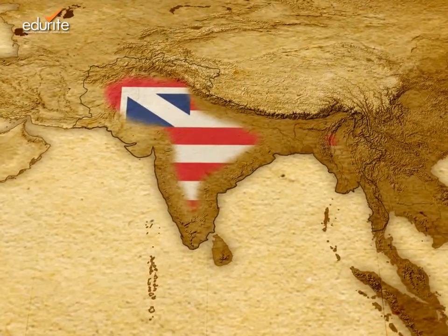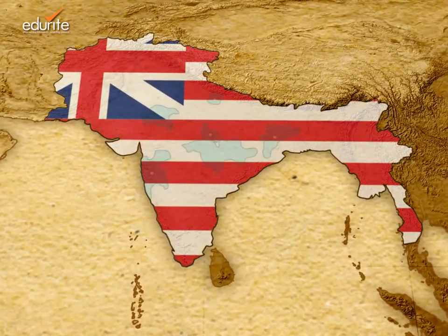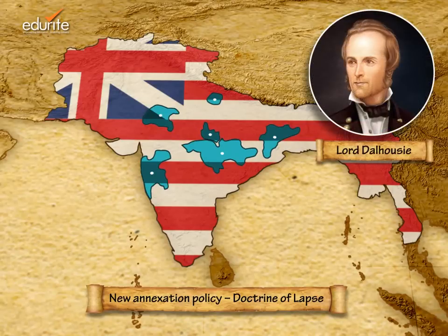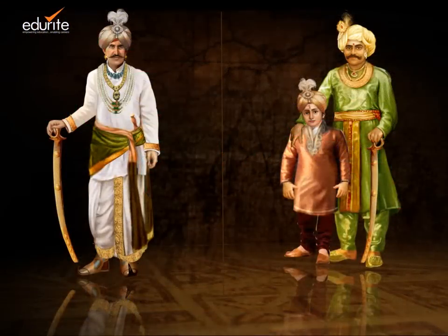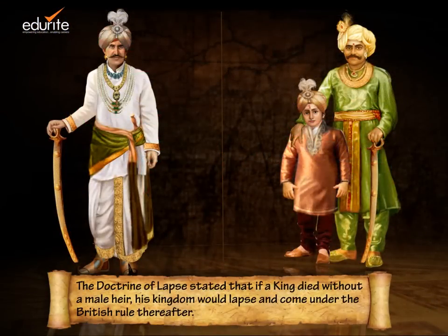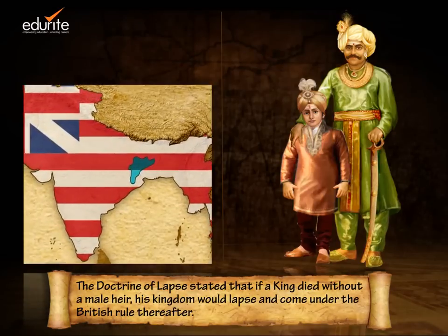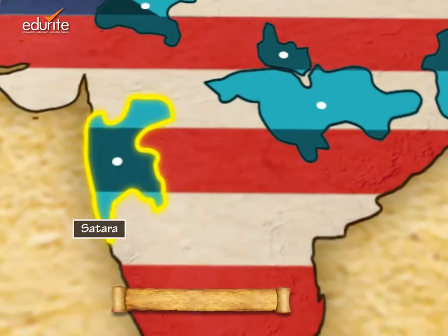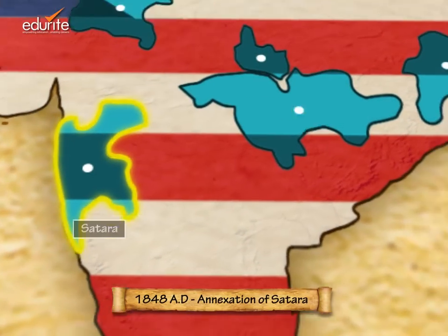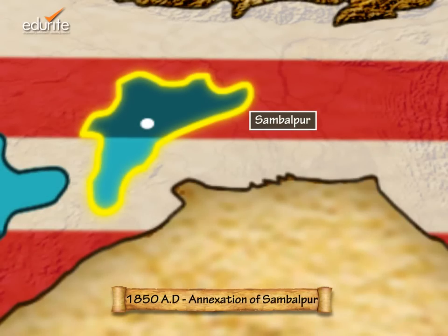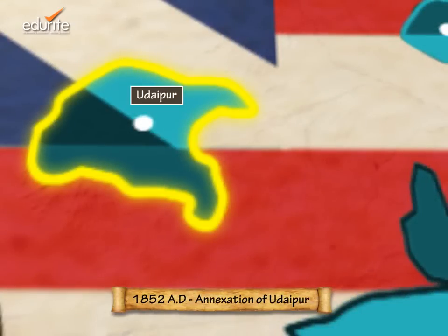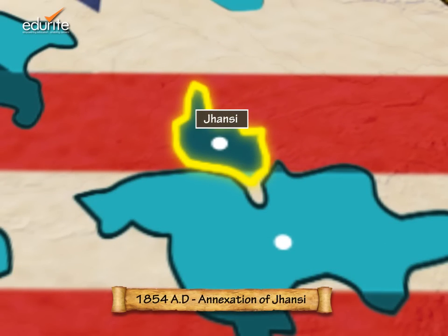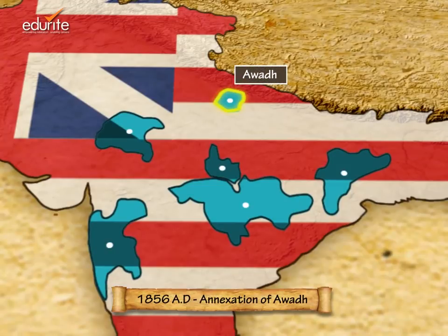The last of the independent Indian states were taken over by a new annexation policy called the Doctrine of Lapse, devised by Lord Dalhousie. According to this policy, if an Indian king died without a male heir, his kingdom would lapse and come under British rule. And so the Indian states of Satara in 1848, Sambalpur in 1850, Udaipur in 1852, Nagpur in 1853, Jhansi in 1854, and the remaining part of Awadh in 1856 were annexed.